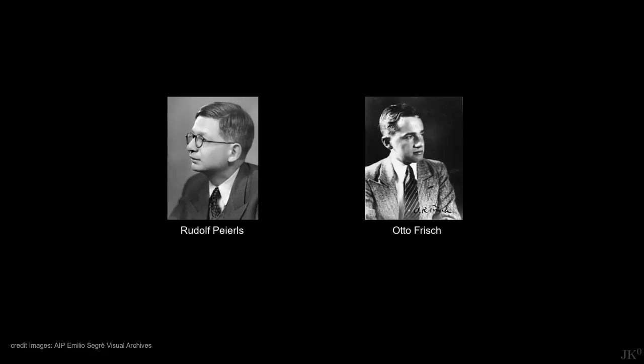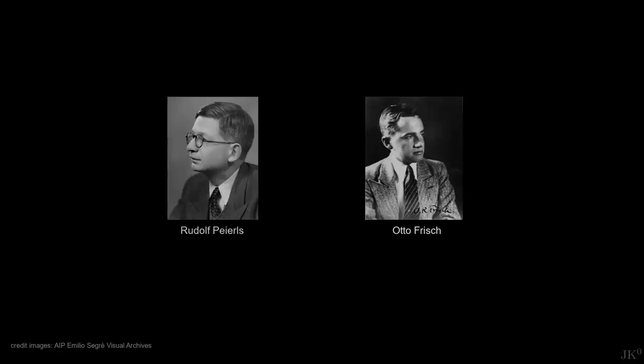Frisch was German. Peierls had just received his British citizenship. They were considered enemy aliens. Now they needed to find a way to communicate their alarming findings to the authorities. This resulted in one of the most influential documents in the history of physics, and led to the development of the first nuclear bomb.